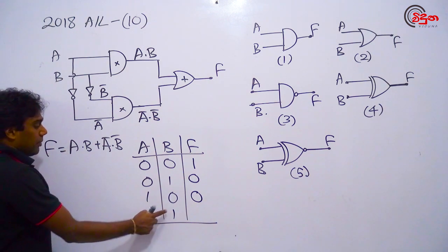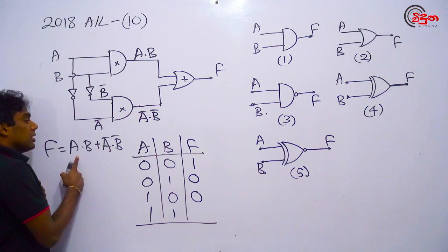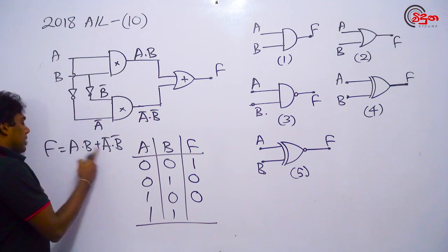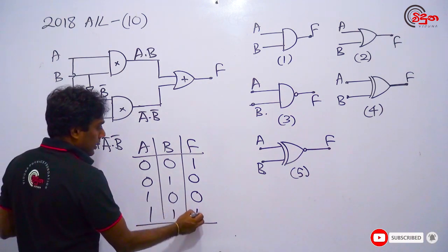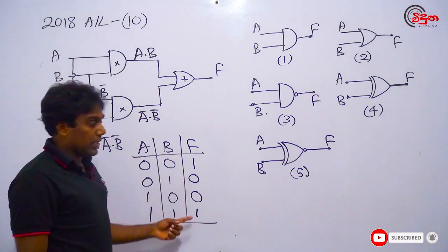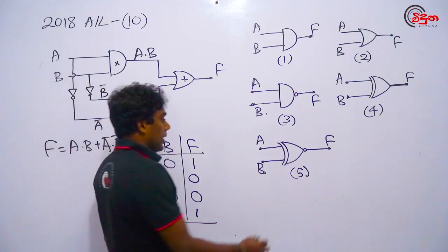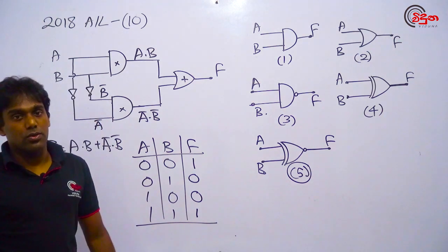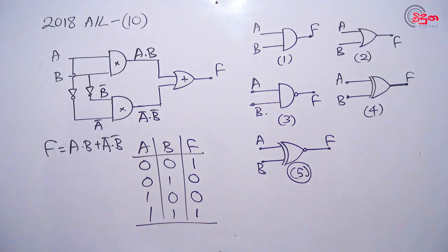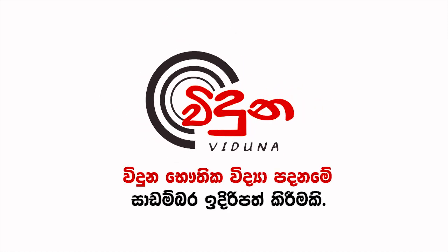If A is equal to B, then F is equal to F. If A is equal to F, then F is equal to F. So, if A is equal to B, then F is equal to F.